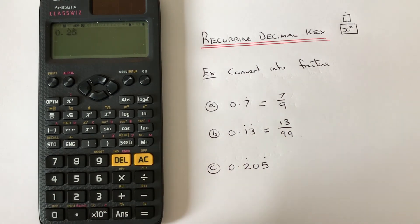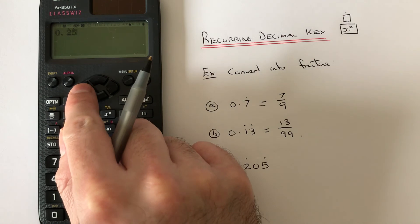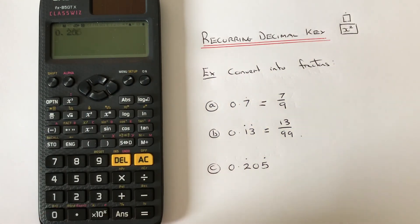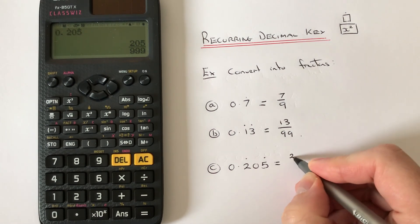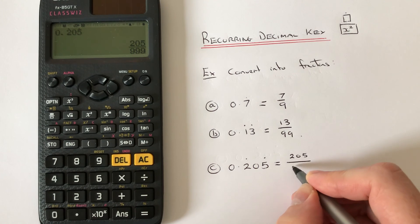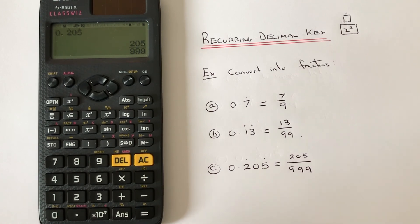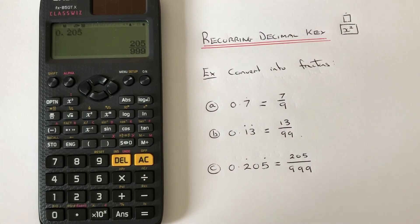If we press equals now, we get our fraction: 205 over 999. Thanks for watching guys, see you next time.